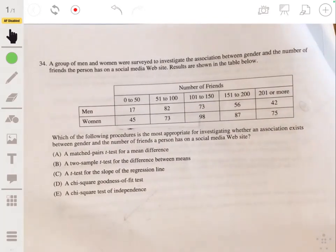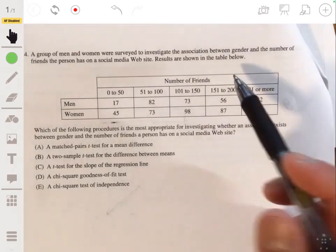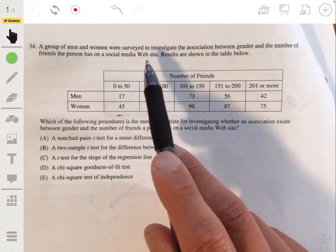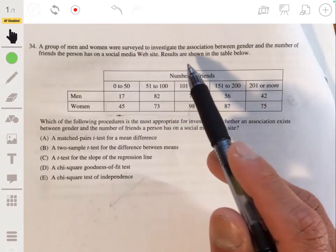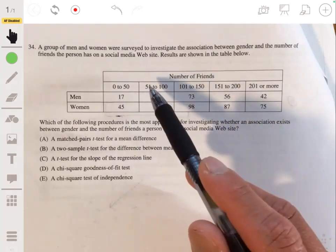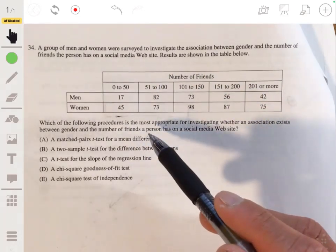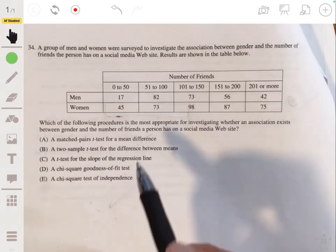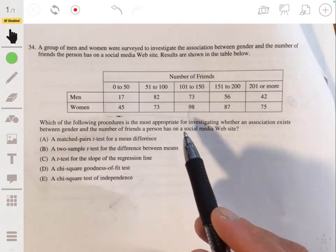All right, 34. A group of men and women were surveyed to investigate the association between gender and the number of friends the person has on social media, on a social media website. Results are shown in the table below. Which of the following procedures is the most appropriate for investigating whether an association exists between gender and the number of friends the person has on a social media website.